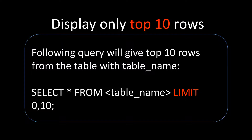We are getting the top 10 rows — starting from zero, which is the first row in the table, we are trying to get 10 rows. So 10 is the number of rows and 0 is the starting point.